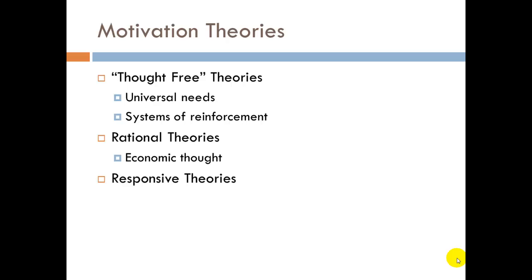The third group of more modern theories — what I call responsive theories — also view thought and judgment as important. But these theories are less reliant on the assumption that thought is completely rational. In these theories, the person acts with a particular intention in mind and responds to whatever feedback the environment provides about their abilities and performance. For the rest of this video, we will focus just on the thought-free theories. We'll look at two of them.